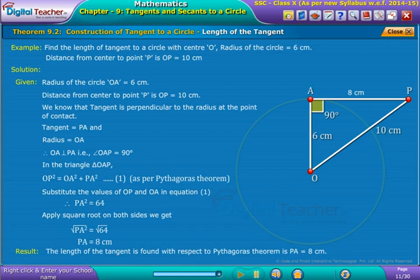Result: The length of the tangent is found with respect to Pythagoras theorem is PA equal to 8 cm.